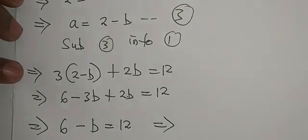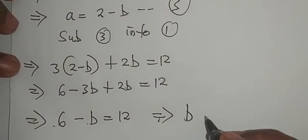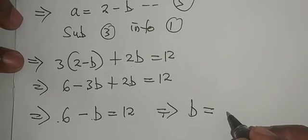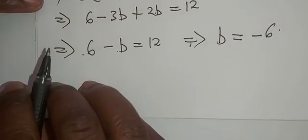Making b the subject, it means b will be 6 minus 12, which means our b equals 6 minus 12, which is minus 6.